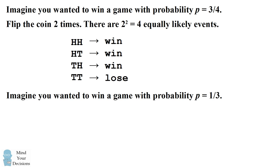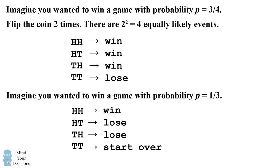Now imagine instead you wanted to win a game with probability one third. We can slightly modify this procedure. We have four coin tosses. What we do is we classify one of them as a win, two of them as a loss, and we say the third sequence — two tails in a row — we can just classify that as disregard these two tosses and start all over. Flip two times again and we again have the same rules on what you do with the coin tosses. You will win this game with probability one third.